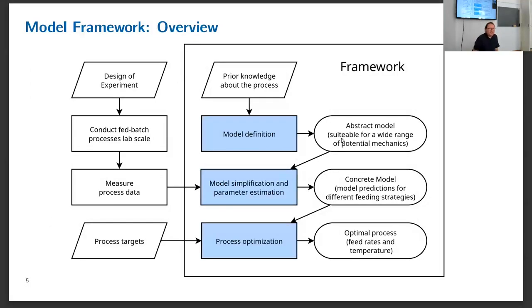So what am I doing about this? I have a framework where we handle the problem in three steps: the model definition, the model simplification, and the process optimization. In the first step I just use process knowledge to set up a general model with a set of equations that is suitable for my range of processes. At this point I don't care if the model gets too big. I want to have all possible effects in the model. In the next step, the model simplification, I use the data to reduce the size of the model. So I can remove all model terms that do not improve the model fit.